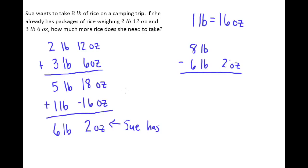We'll use the same process — one pound equals 16 ounces — but a little differently. We'll borrow one of our pounds, so now I have seven pounds, and since I borrowed one pound I can add 16 ounces. Now I can easily take 16 minus 2, which is 14.